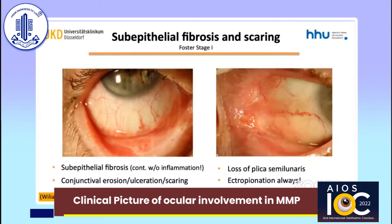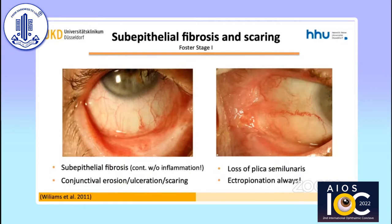In the following slides, I will present to you the clinical signs as the disease progresses. Those findings form the four stages of the Foster classification. Early clinical signs are conjunctival cicatrization, for example around the semilunar fold as in the right picture, ulceration, as well as involvement of the caruncular structures.